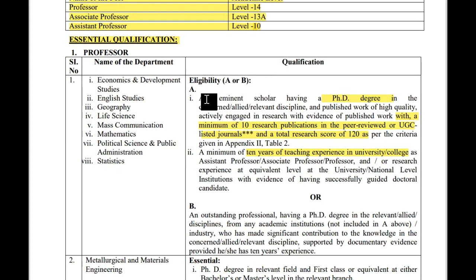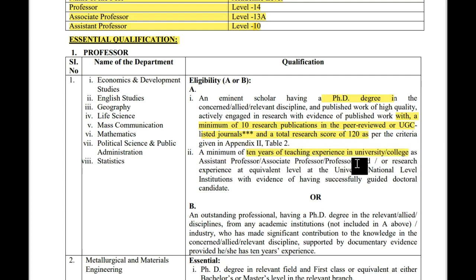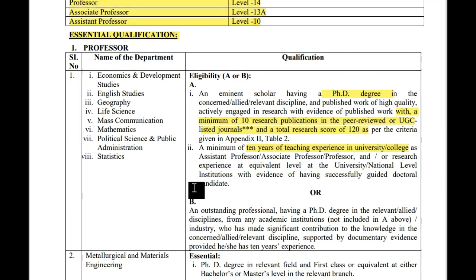For all subjects, the eligibility for Professor is: an eminent scholar having a PhD degree with a minimum of 10 research publications in peer-reviewed or UGC-listed journals and a total research score of 120 as per the criteria given in Appendix to Table 2. Second, a minimum of 10 years of teaching experience in university or college as Assistant Professor, Associate Professor, or Professor, and/or research experience at equivalent level, with evidence of having successfully guided doctoral candidates.